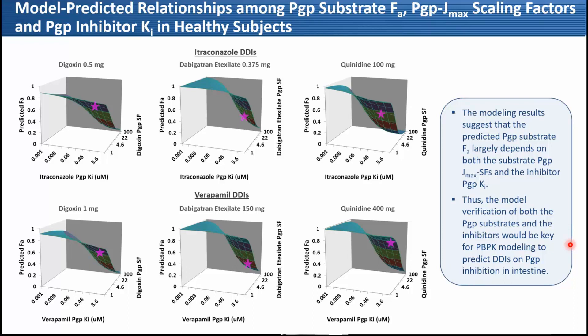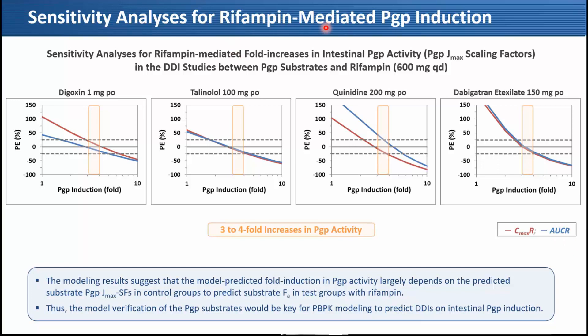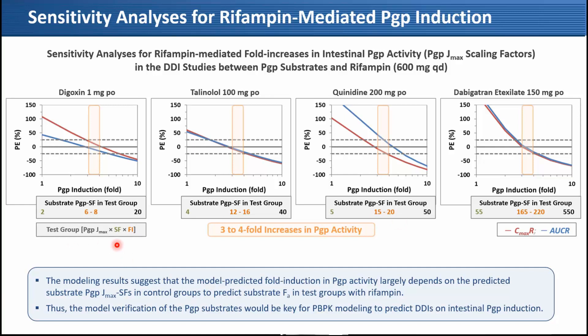For the rifampin-mediated P-gp induction sensitivity analysis, a 3- to 4-fold increase in P-gp activity corresponds to a scaling factor of 6 to 8, given a baseline substrate scaling factor of 2. Fold induction really depends on the predicted substrate Jmax scaling factor. This also suggests model verification for P-gp substrates is key for PBPK modeling to predict rifampin-mediated DDI.